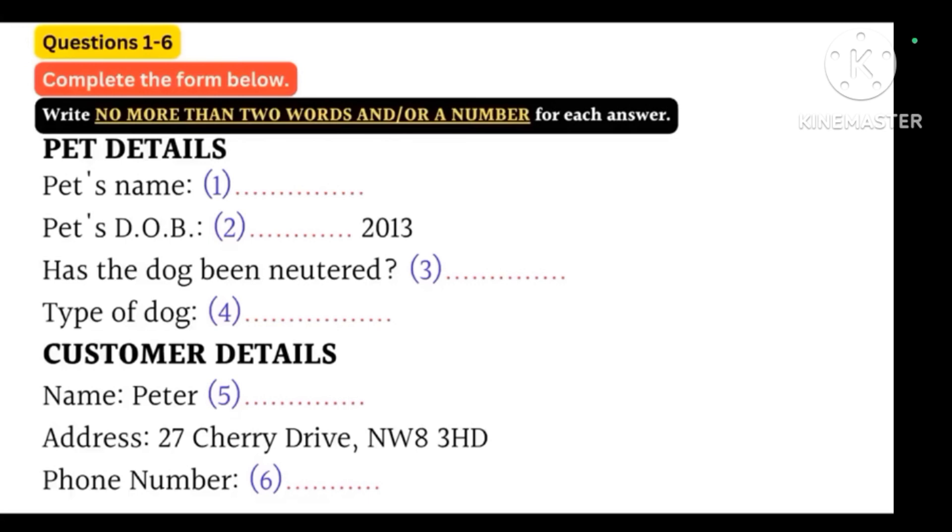Excellent. And is he a guide dog, or...? No, just a house pet. Great. And you said he's three years old. Do you know the exact date of birth? Oh yes, it's on the adoption certificate. Just give me a sec. It's May 19th, 2013. And do you know, has Fenton been neutered? Yes, he's been castrated.